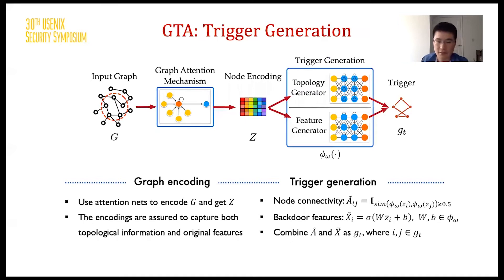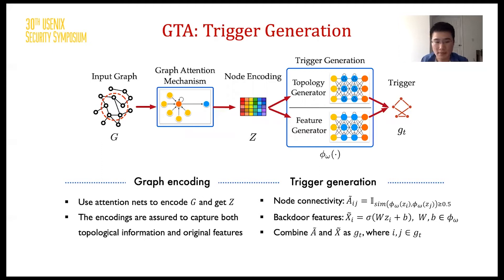I will now introduce the design procedures of GTA. At the very beginning, we leverage a well-trained graph attention network to encode each graph. Those encodings are assured to capture both topology information and original features. Then, we use those encodings for trigger generation, where we construct two fully connected networks as a topology generator and a feature generator respectively. The topology generator maps node encodings into a low-dimensional space and determines whether two nodes should have a connection in the trigger based on their encoding similarity.